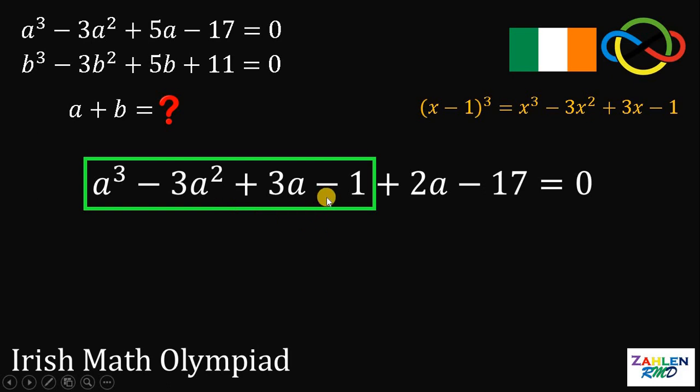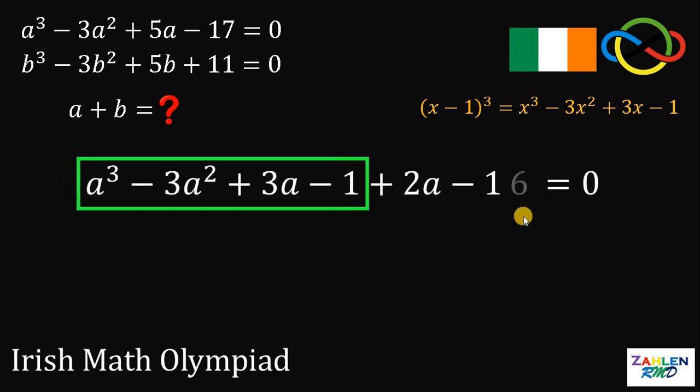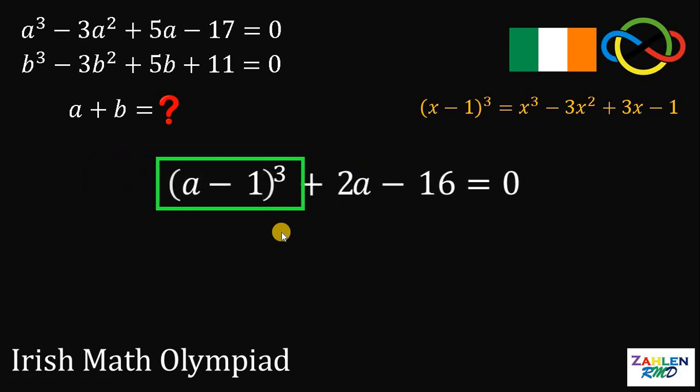And then we want negative 1 or minus 1. So let's minus 1 on this expression. And since we subtract 1, we need to add 1 to balance our equation. So negative 1 and positive 1 is just 0. Negative 17 plus 1 is just negative 16. And take note that this A cubed minus 3A squared plus 3A minus 1 is just A minus 1 raised to 3.